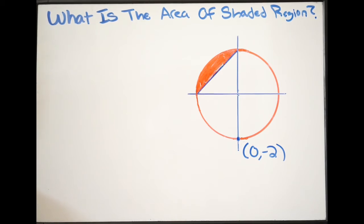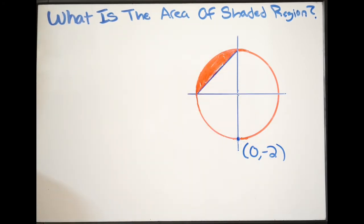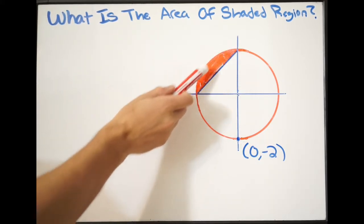In this example, we're being asked what is the area of the shaded region. We can see here that we have this circle on a coordinate grid, and they want to know what is the area of this shaded region.